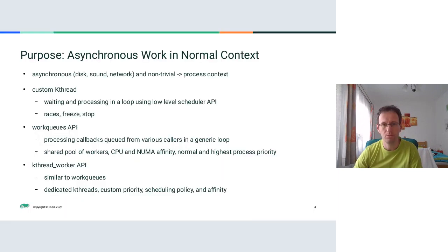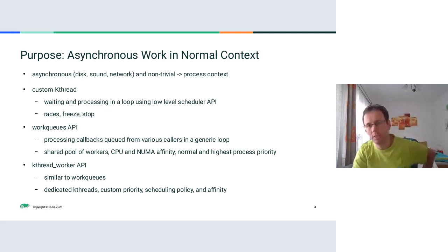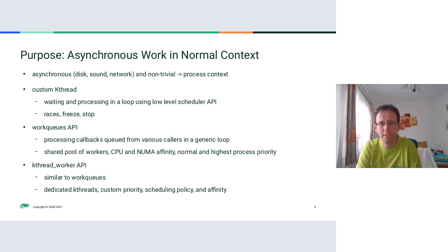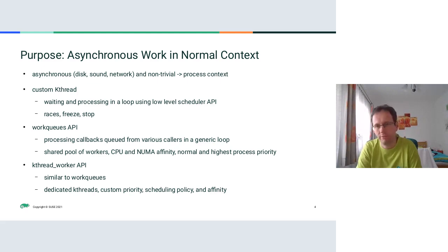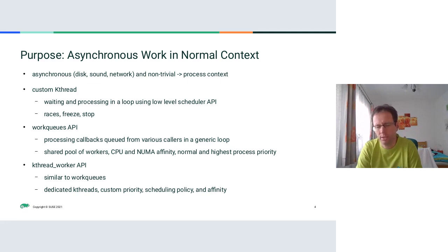The kernel has to do some things in a normal context, which means a normal process context. This is needed, for example, when it has to do something asynchronously, or when something non-trivial is triggered from atomic context and has to be offloaded to normal context.